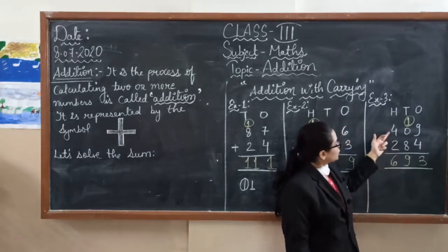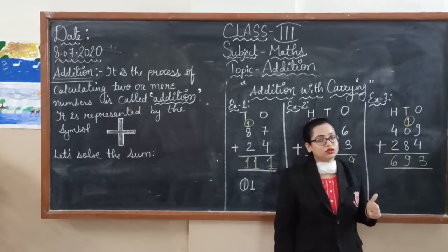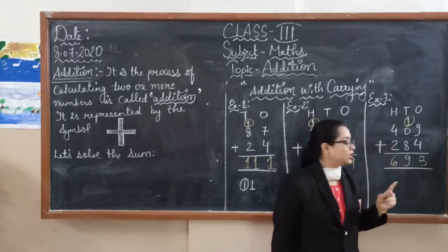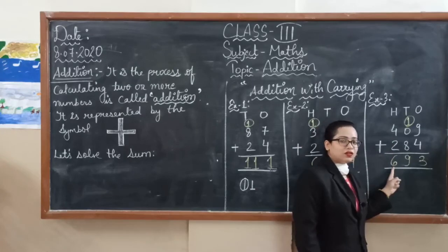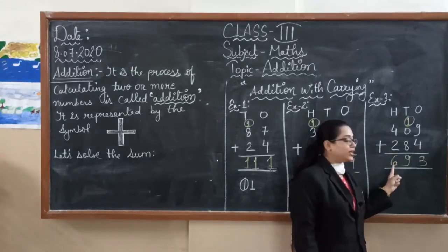Last number is four plus two. After four, two more numbers. Count five and six. So here we can write six. Our final answer is six hundred and ninety-three.